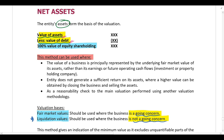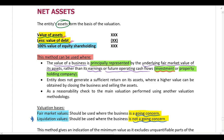When should we use this method? We should use it if the value of the business is principally represented by the fair value of their assets rather than their earnings or future operating cash flows. For example, if we have an investment or a property holding company, the value of that company is going to be principally represented by the value of their assets. If we have an investment company, its value is determined by the investments they hold. Similarly, if we have a property holding company, the value should be determined from the value of the property they own — we look at assets instead of earnings or cash flows.